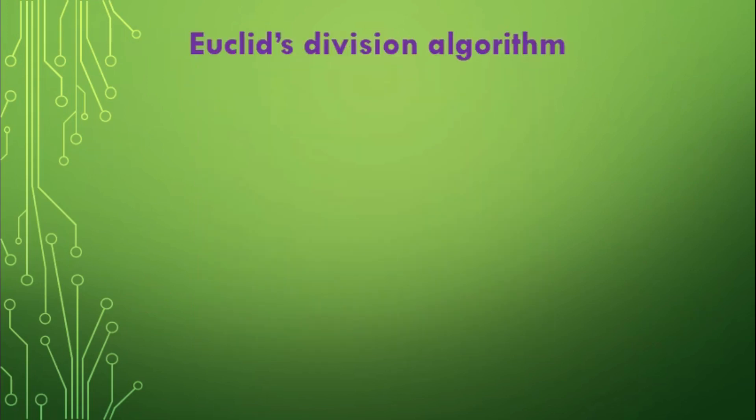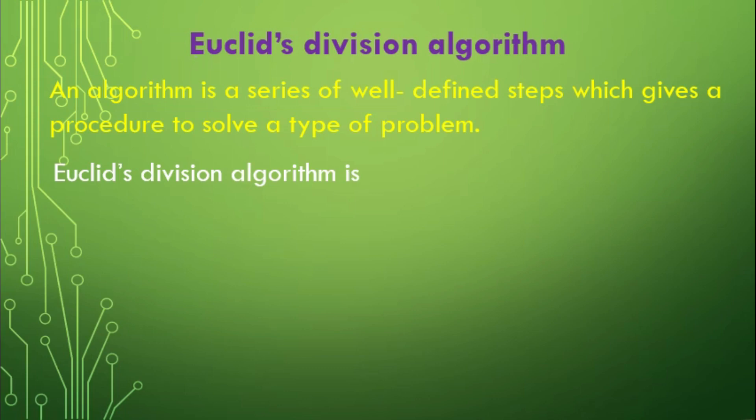Euclid's Division Algorithm. An algorithm is a series of well-defined steps which gives a procedure to solve a type of problem. Euclid's Division Algorithm is a technique used to compute the highest common factor of two given positive integers.